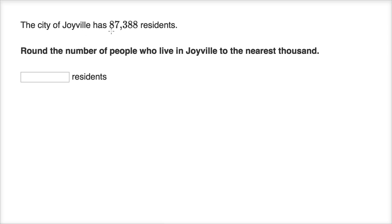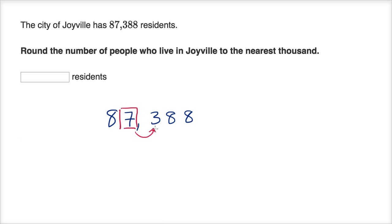The city of Joyville has 87,388 residents. Round the number of people to the nearest 1,000. We have 87,388, and we want to round to the nearest 1,000. We go one place to the right and see that it is less than five, so we round down to 87,000. That is the nearest 1,000.